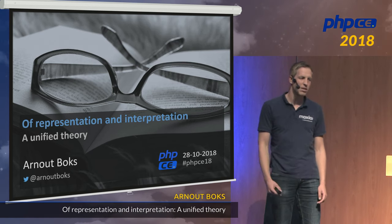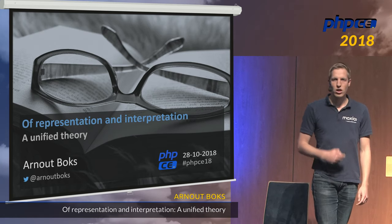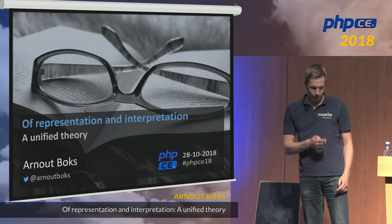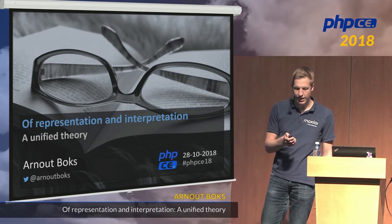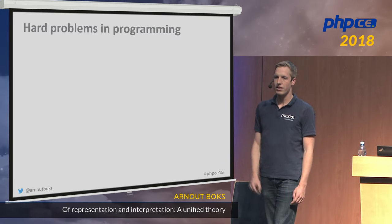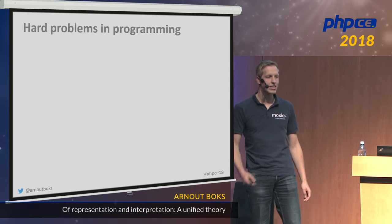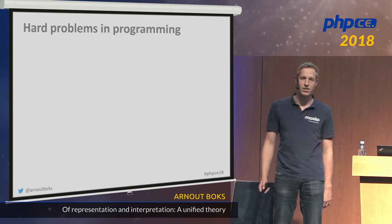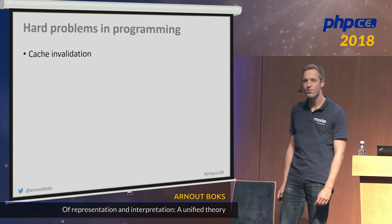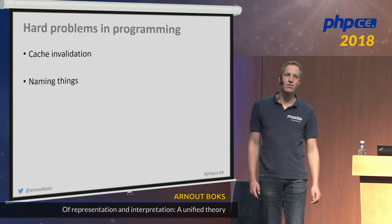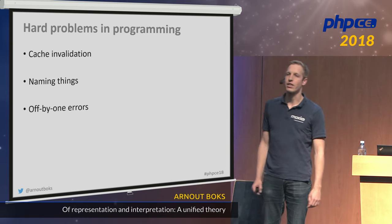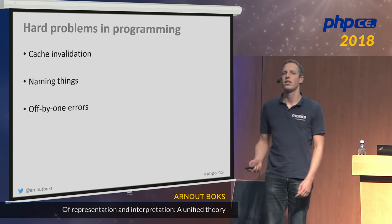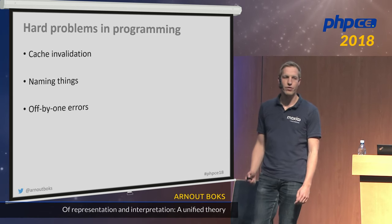What I want to talk to you about today is hard problems in programming. Those of you who know the classic joke — we all know there are two hard problems in programming: caching, validation, naming things, and of course off-by-one errors. But I would argue there are more hard problems in programming that we forget.